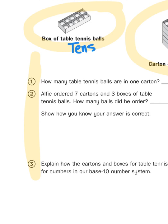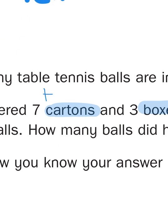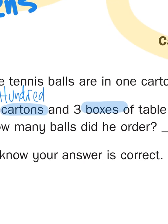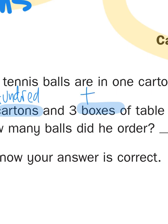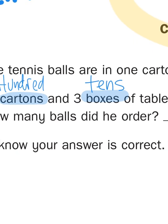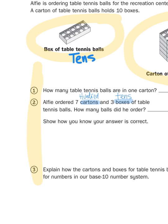So again, if I use my super decoder ring and realize that we're just talking about 100s and 10s here, if I write the word 100 over the word carton and the word 10 over the word boxes, if Alfie ordered 700 and three 10s of table tennis balls, how many balls did he order? Show how you know your answer is correct.